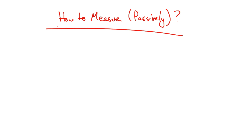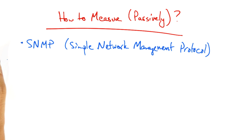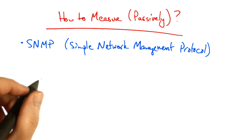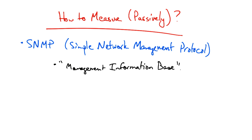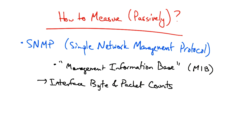Let's talk about how to perform passive network traffic management. One way to do this is using the packet and byte counters provided by the Simple Network Management Protocol. Many network devices provide what's called a Management Information Base, or a MIB, that can be polled or queried for particular information. One common use for SNMP is to poll a particular interface on a network device for the number of bytes or packets that it's sent.